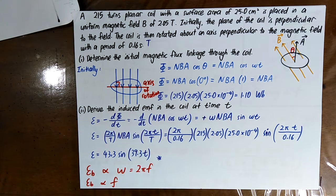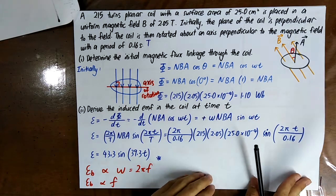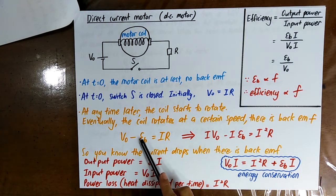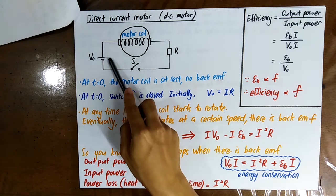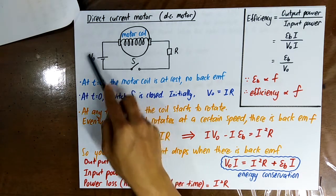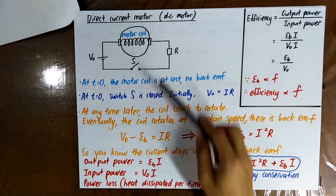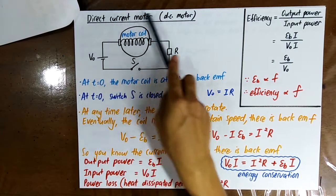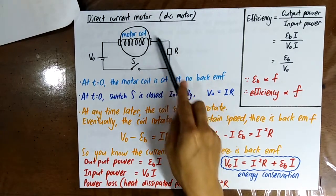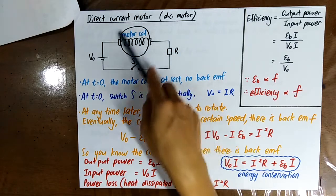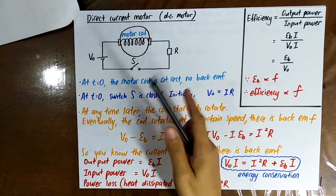Back EMF is the induced EMF. Back EMF has the opposite polarity to the EMF of the battery. This is the direct current motor — the DC motor. Inside the DC motor we have a coil, and the coil can rotate.